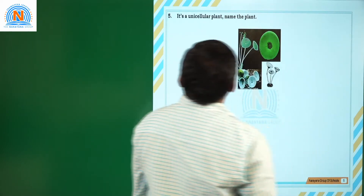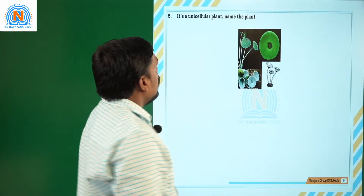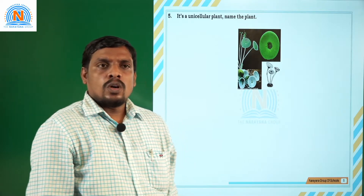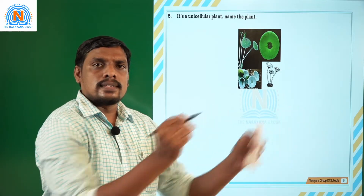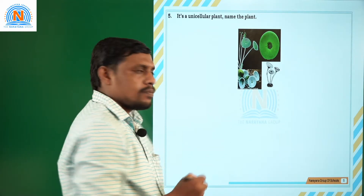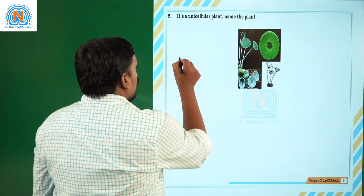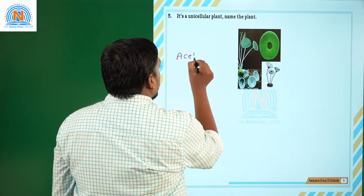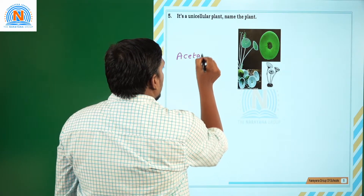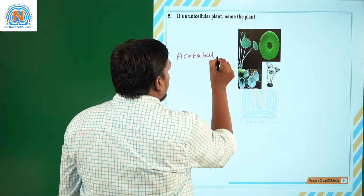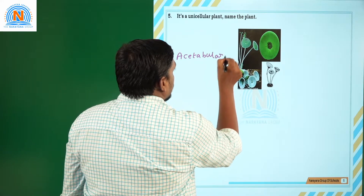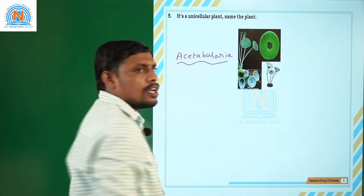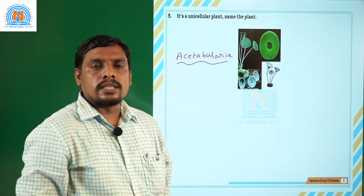Fifth question: it is a unicellular plant — name this plant. The only living unicellular plant in the plant kingdom is acetabularia.